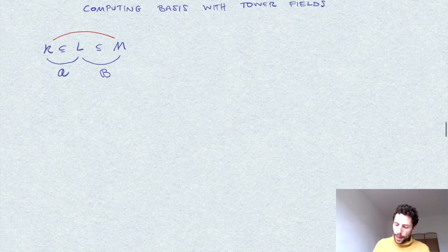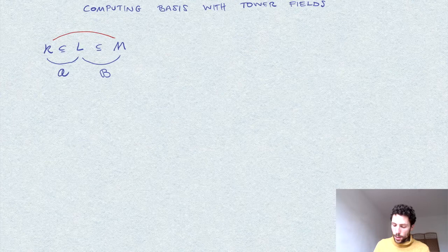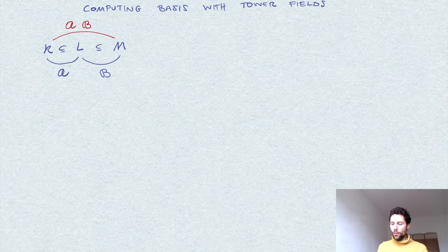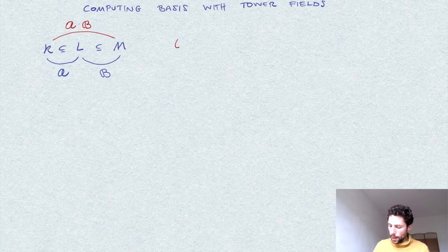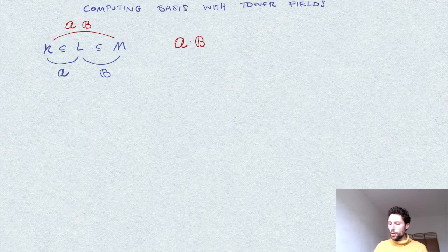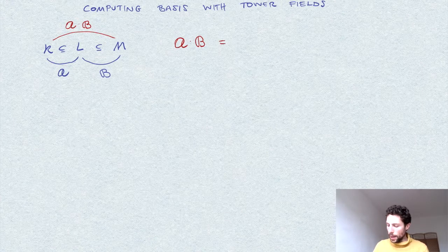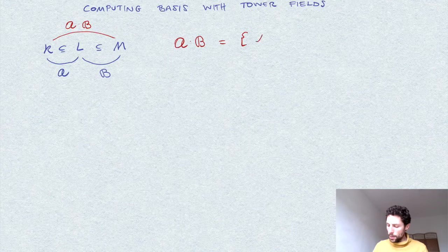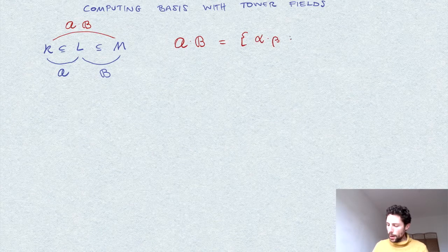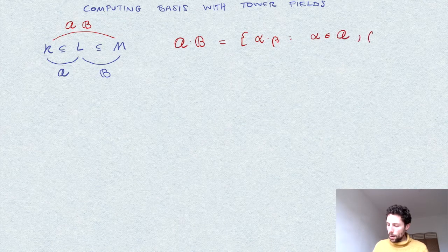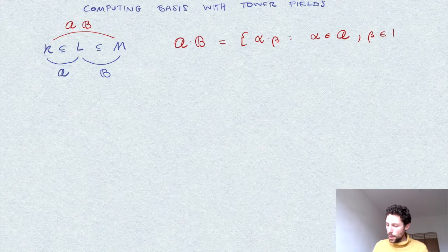In this case, our question is how to compute the basis of the biggest extension M over K. This important result says that we can obtain this as a product basis of A and B, where A dot B is given by the products of the elements in the two bases, namely alpha times beta where alpha is in A and beta in the basis B.